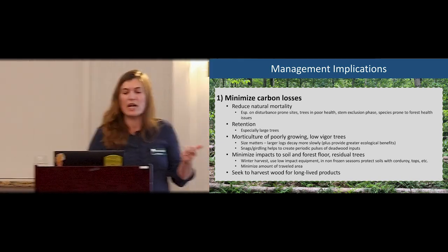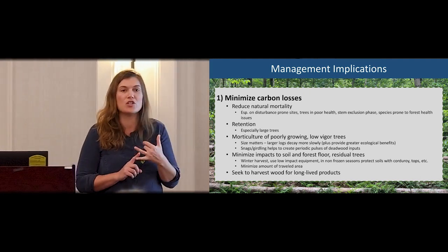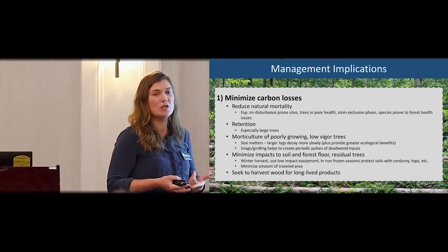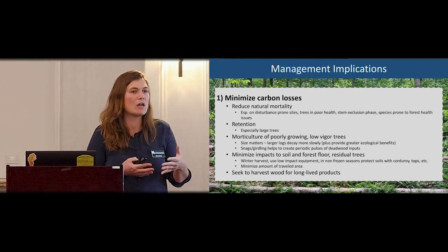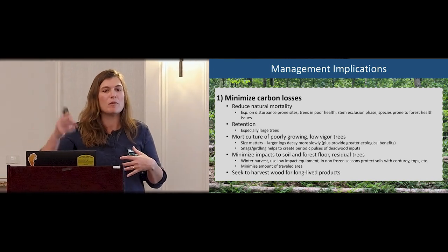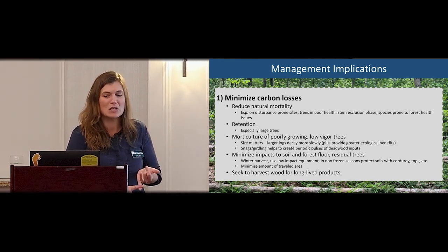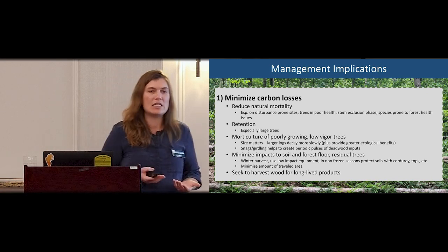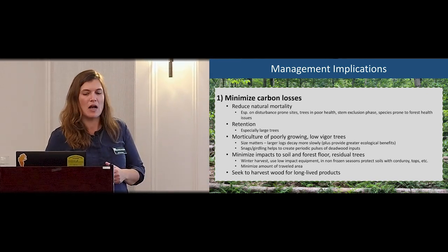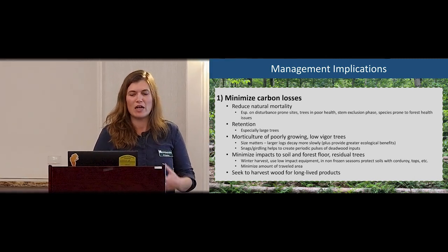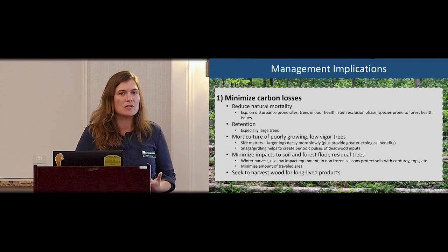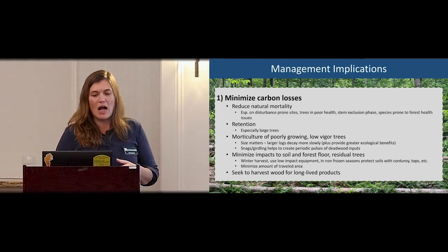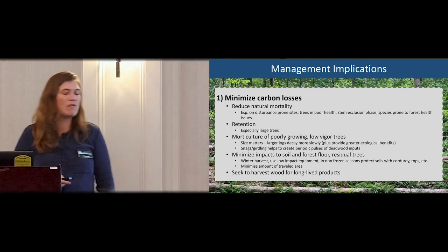So to end with management implications: minimizing carbon losses, reducing natural mortality especially on disturbance-prone sites, and addressing trees in poor health. The stem exclusion phase can be a good opportunity to enhance growth of remaining trees. Places where the forest is prone to forest health issues might get better carbon benefits. Retention is really important — especially large trees on site — keeping some carbon on site and some trees that can immediately sequester carbon after timber harvest. Using morticulture on poorly growing trees, especially large trees that decompose slowly. Snags and girdled trees can allow periodic input of carbon, and minimizing impacts on soil and forest floor is really important for total carbon benefits.